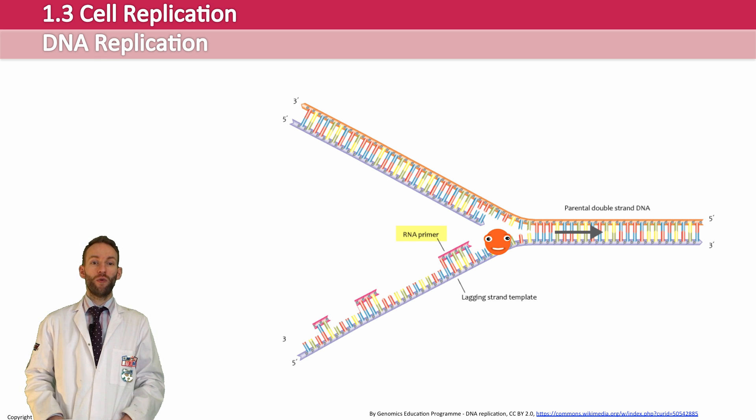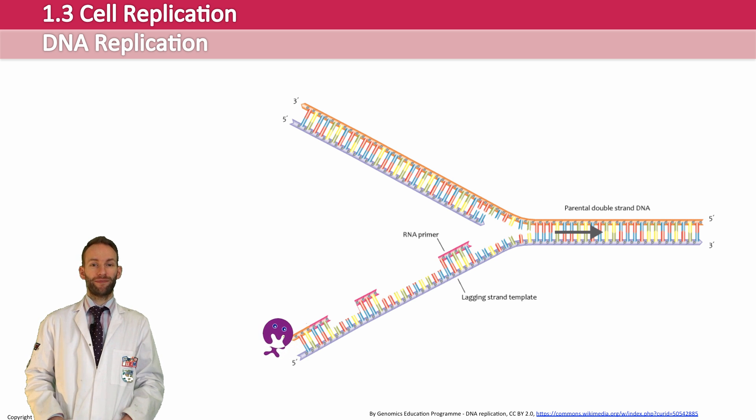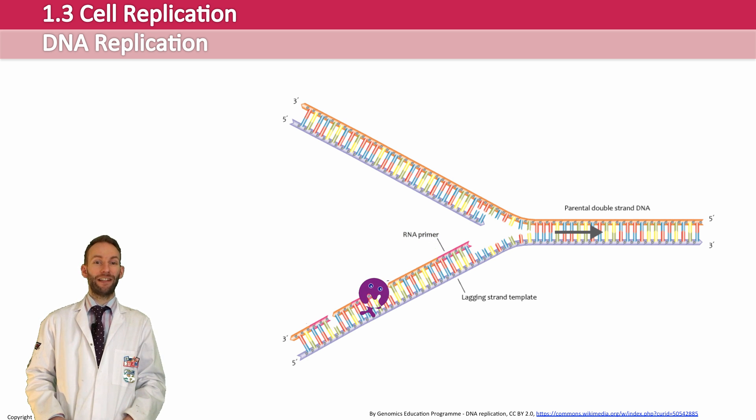The RNA primers show where the DNA polymerase should start. The DNA polymerase three can then go along and attach to the RNA primers and replicate in the direction that they work, which is the five prime to three prime direction. And once they've done that section, they detach and leapfrog to the next primer following the helicase. These new strands of DNA are what we call Okazaki fragments.